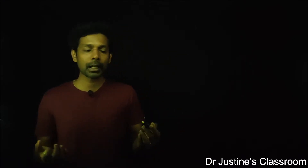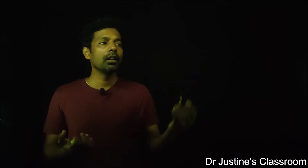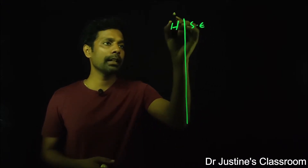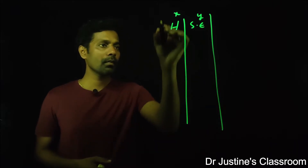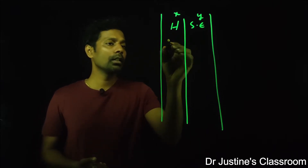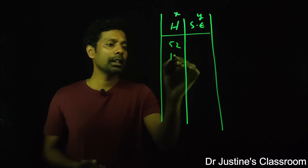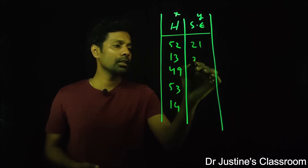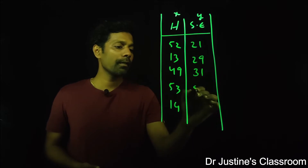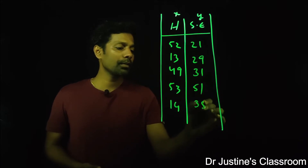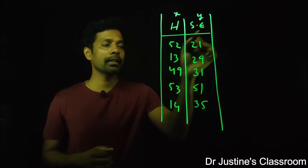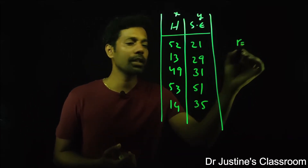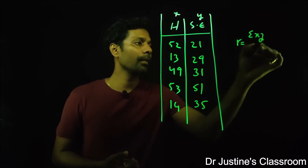For example, let's take two variables x and y — say happiness and self-esteem. You have happiness values and self-esteem values, with scores like 52, 13, 49, 53, 14, 21, 29, 31, 51, 35. If we want to find the relationship between happiness and self-esteem, we typically use the Pearson correlation.